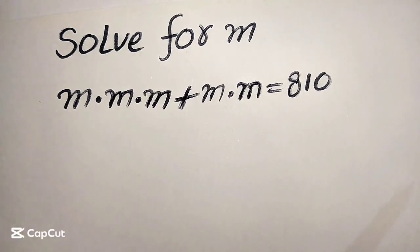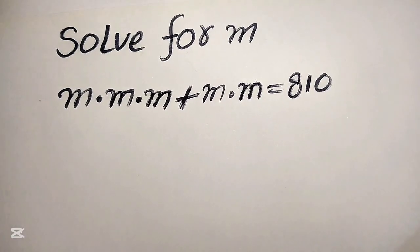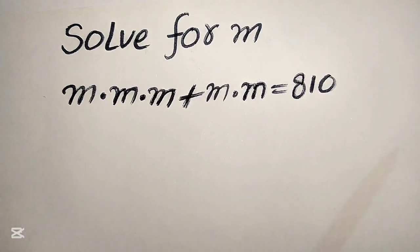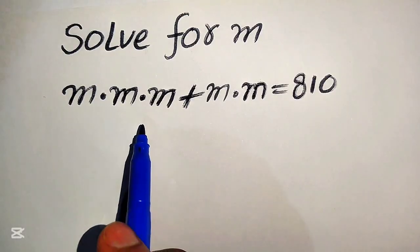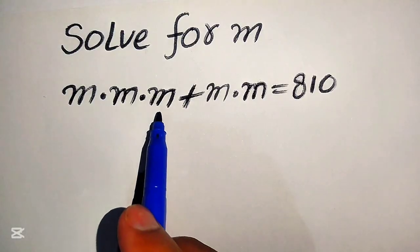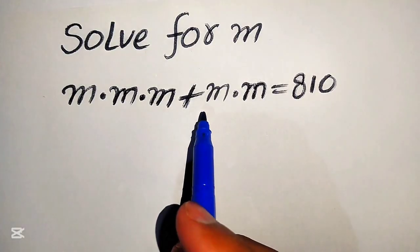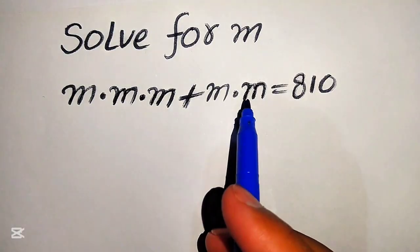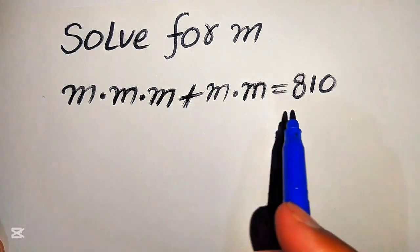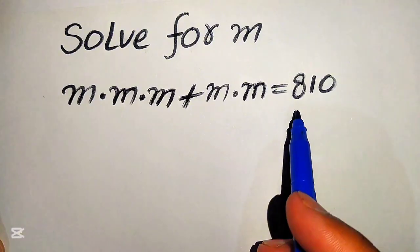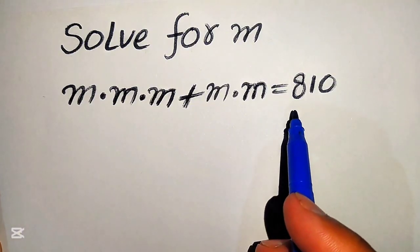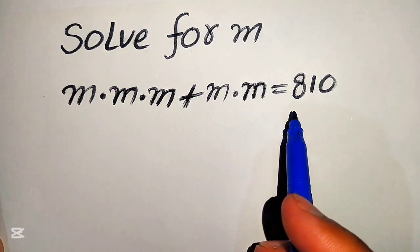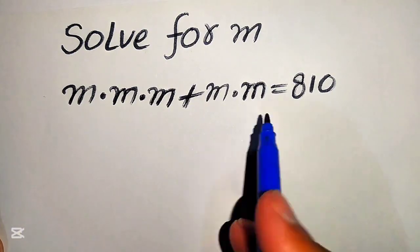Hello everyone. Today I want to show you how to solve this problem for the values of m, if we have m multiplied by m multiplied by m, plus m times m, equals 810, and we solve this problem for the values of m.